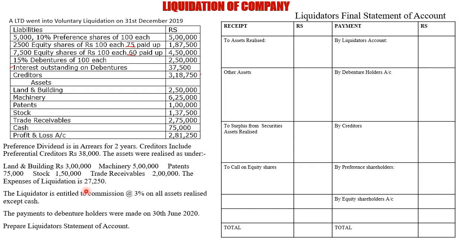The liquidator is entitled to a commission of 3% on all assets realized except cash. The payment to debenture holders was made on 30th June 2020, so there is a 6-month gap between the liquidation date of 31st December 2019 and the debenture payment date.